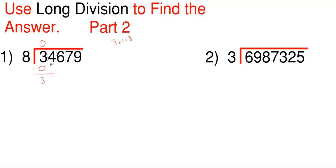Then what we're going to do is drop down our next number and combine it with our previous number to make 34. You don't add them together — you just place them next to each other, and now it's 34 instead of 3.